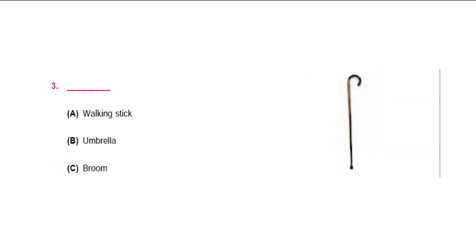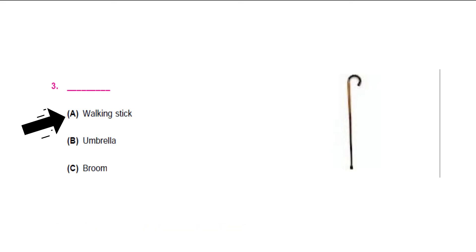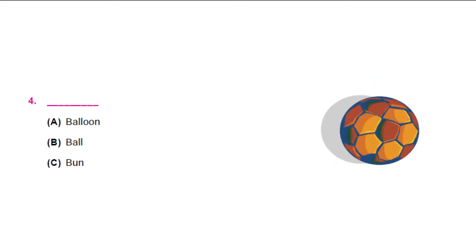Let's see this one. Do you know anyone in your house uses this? What is it called? It is a walking stick — that is option A. Our next question in this section: easy one, I'm sure you all have it. What is this object shown? It is option B, the ball.